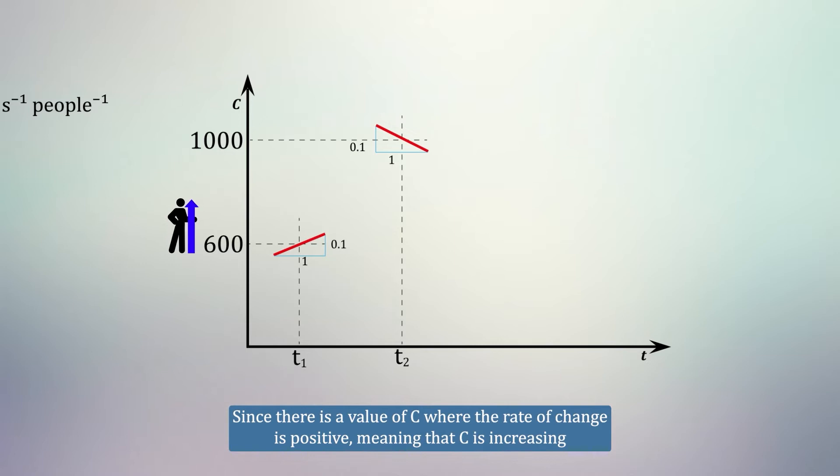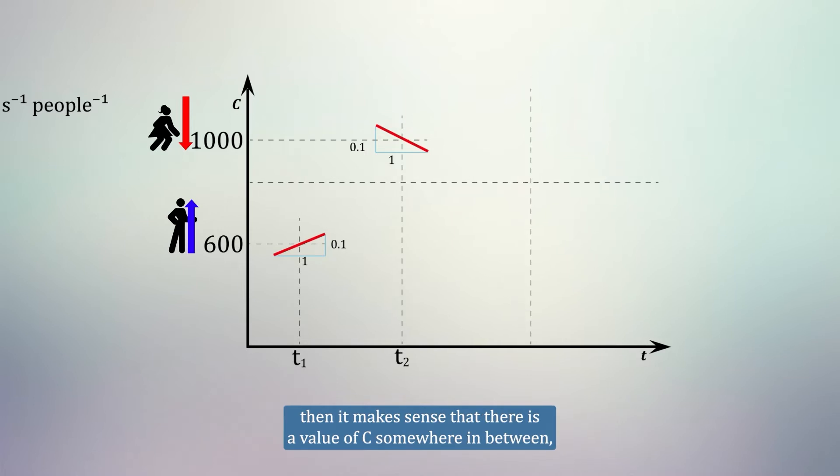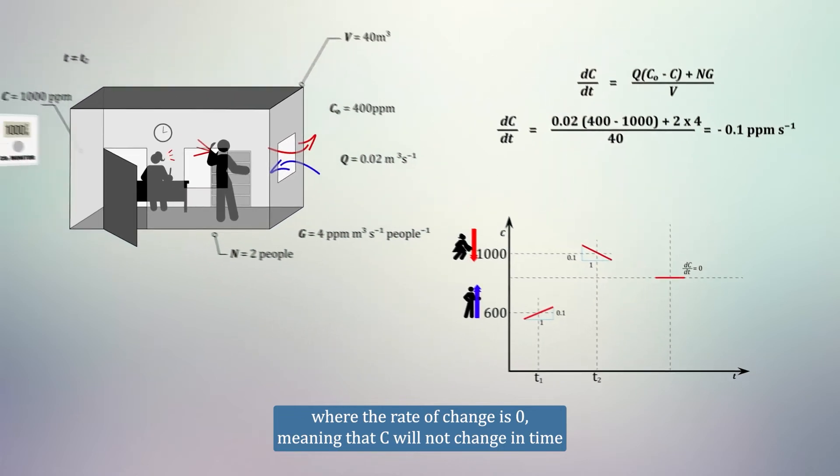Since there is a value of C where the rate of change is positive, meaning that C is increasing, and a value of C where the rate of change is negative, meaning that C is decreasing, then it makes sense that there is a value of C somewhere in between, where the rate of change is 0, meaning that C will not change in time.